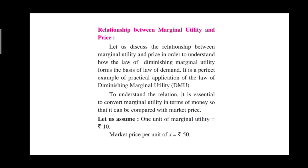Now, recall the table you have studied earlier: units consumed are 1, 2, 3, 4, 5 — with marginal utility values of 10, 8, 6, 4, 2, 0, -2. We assume that one unit of marginal utility equals rupees 10. The market price per unit of commodity X is rupees 50. Keep these two key assumptions in mind.